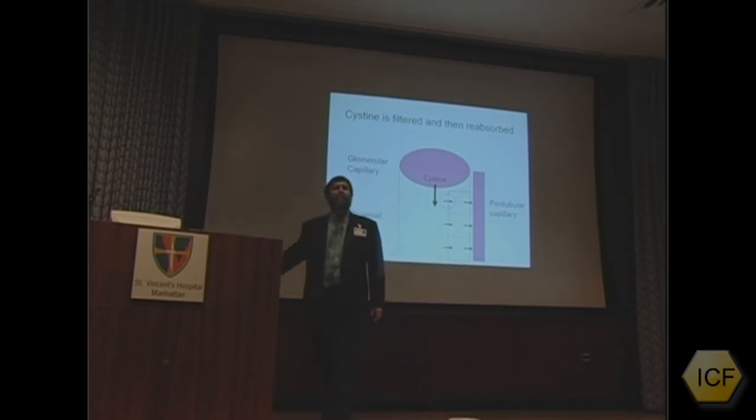What we're interested in is this membrane here, this membrane of the proximal tubular cells that's facing the urinary space. And this red circle is going to show us where the cystine is getting reabsorbed.